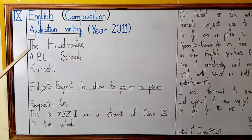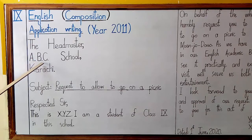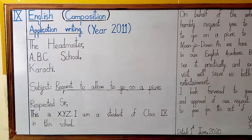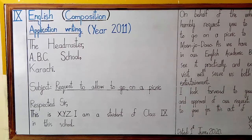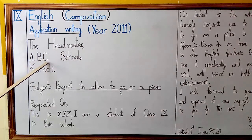Starting from the name of the recipient — the headmaster — you are addressing the headmaster, so write 'The Headmaster.' For the address of recipient: A Road, B Road, C Road — remember I told you particularly about the punctuation marks to follow and you have to strictly follow them. So here: 'The Headmaster, A.B.C. School, Karachi.' — Headmaster with capital H, School with capital S, and Karachi with capital K.